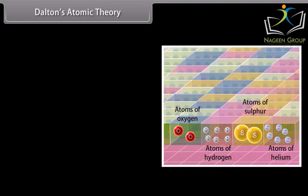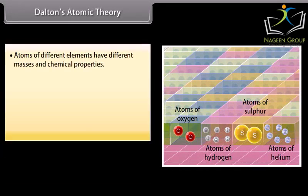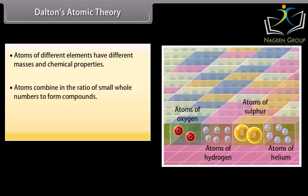4. Atoms of different elements have different masses and chemical properties. 5. Atoms combine in the ratio of small whole numbers. 6. The relative number and kinds of atoms are constant in a given compound.